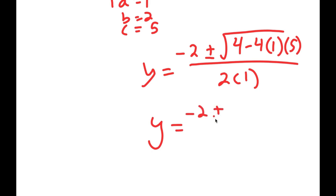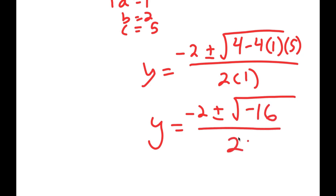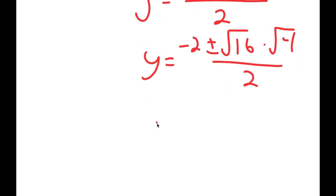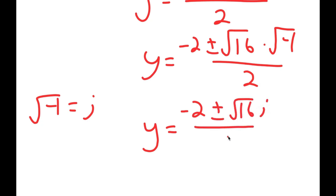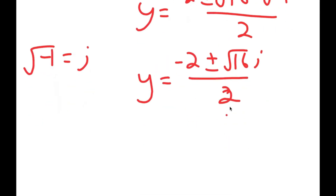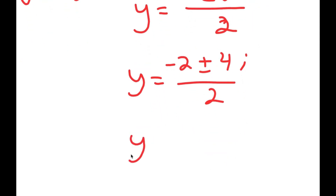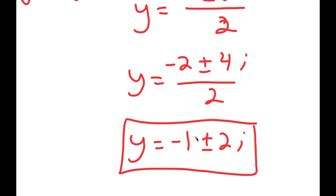This equals negative 2 plus or minus the square root of 4 minus 20, which is negative 16, over 2. I can rewrite this as negative 2 plus or minus the square root of 16 times the square root of negative 1, over 2. The square root of negative 1 is the imaginary number i. So this is equal to negative 2 plus or minus 4i over 2, which simplifies to y equals negative 1 plus or minus 2i. So these are two more solutions for y.